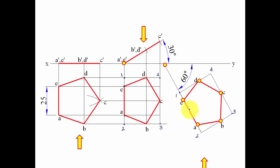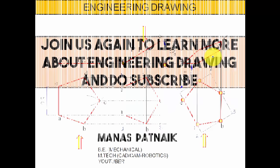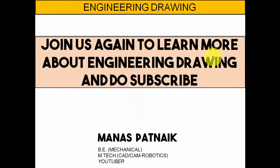For the final front view, projector lines are drawn from bottom to top and left to right. Intersection points give each vertex: the vertical and horizontal for point A gives point A, similarly for point B, and so on. Joining all points gives the final projection — the view when the surface makes 30 degrees with the HP and one side is inclined at 60 degrees to the VP.